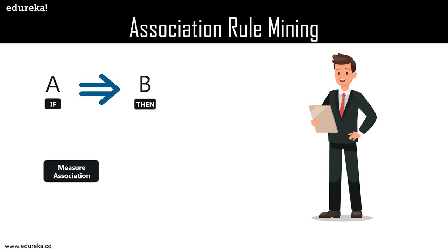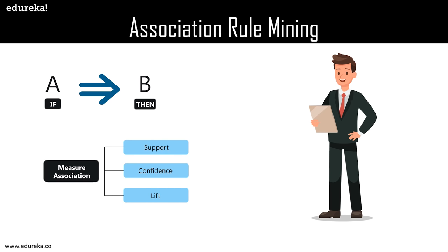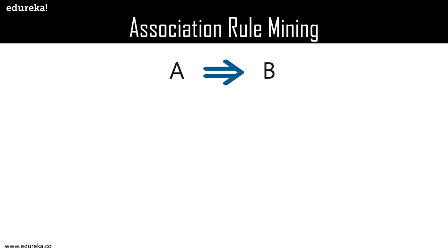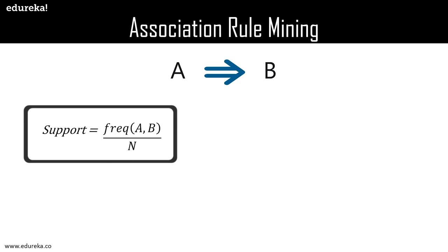Before getting into the Apriori algorithm, let's understand the math behind it. There are three types of metrics which help measure association: support, confidence, and lift. Support is the frequency of item A or the combination of items A and B — it is basically the frequency of items bought. Using support, we can filter out items which have been bought less frequently.